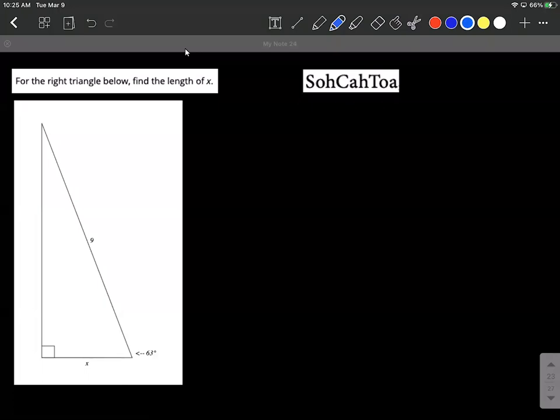It's important to note we're given 63 degrees as that bottom right angle. As we label the sides, x is at the very bottom, so that'll be the adjacent side, and then 9, that's across from the right angle, so that'll be the hypotenuse.